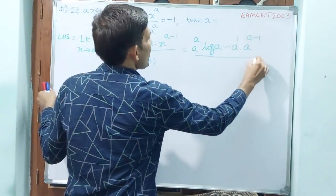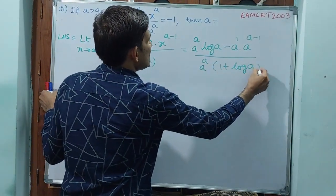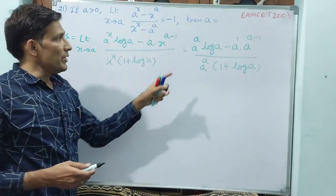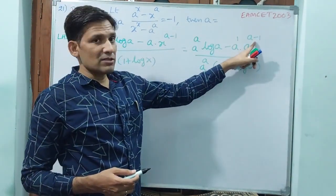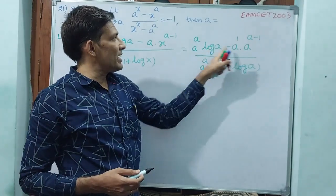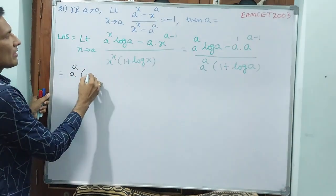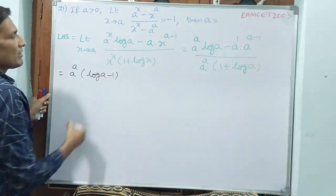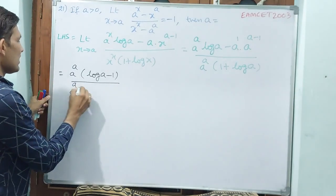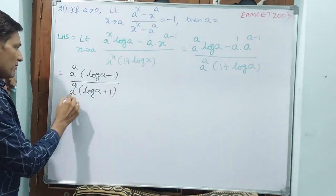Now, a times a power a minus 1 — since the bases are the same, adding exponents gives a power a. So a power a can be taken as common from both numerator terms. Taking a power a common from the numerator gives log a minus 1, and from the denominator a power a times 1 plus log a — so a power a cancels out, leaving log a minus 1 divided by log a plus 1.